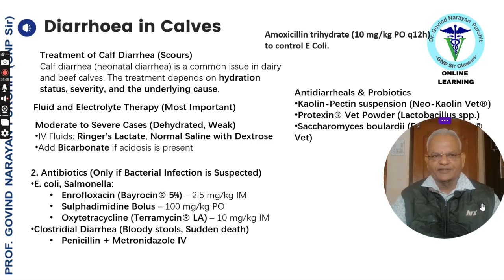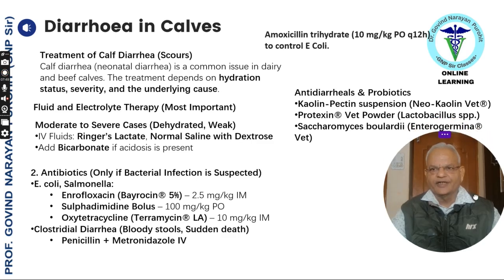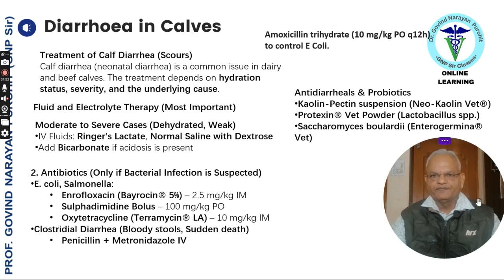Antibiotics should only be used if bacterial infection is suspected, such as E. coli or Salmonella. One can use enrofloxacin at 2.5 mg per kg intramuscular, sulfadimidine bolus 100 mg per kg orally, or oxytetracycline 10 mg per kg intramuscular. For clostridial diarrhea with bloody stools and sudden death, one can use penicillin and metronidazole intravenously, or amoxicillin trihydrate 10 mg per kg every 12 hours to control E. coli.